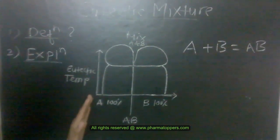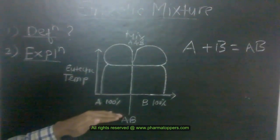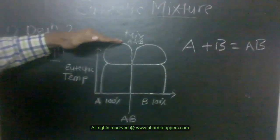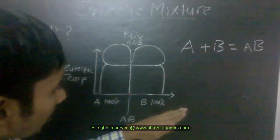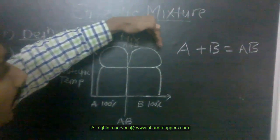For the A component, the melting point, the temperature of the melting point of A is higher. You see here, it is higher. For the B component, the melting point is also higher.